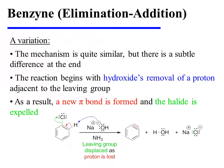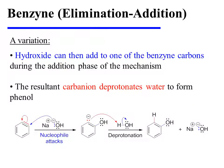The mechanism is quite similar to what we saw previously, but there is a subtle difference at the end. The reaction begins with hydroxide's removal of a proton adjacent to the leaving group. As a result, a new pi bond is formed as the halide is expelled and the benzyne intermediate is produced. During the addition phase of the mechanism, hydroxide can then add to one of the benzyne carbons, displacing a pi bond onto the adjacent atom. The resultant carbanion then deprotonates water in order to form phenol.